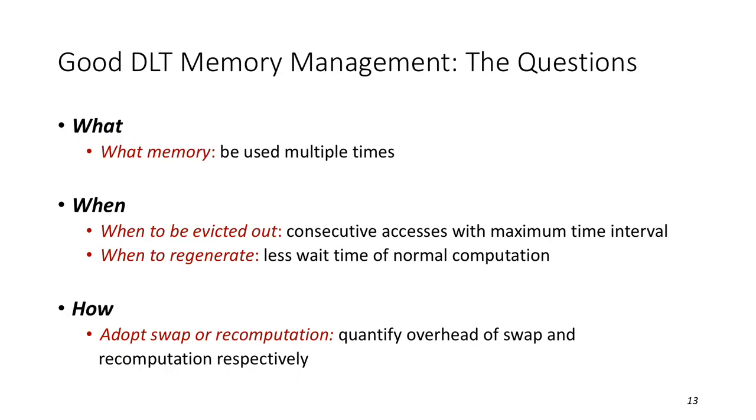Let's think about what questions we need to answer to make good memory management in deep learning training. Here, good means achieving best performance while reducing memory footprint as much as possible. First, we need to know what memory can be optimized. It's obvious that this memory needs to be used multiple times during one iteration. So we can evict it out at its one access and regenerate it at its next access. Second, we need to decide when to evict this memory out and when to regenerate. For evicting out, we can identify two consecutive accesses with the maximum time interval. For regeneration, we should reduce the waste time of normal computation. Third, we need to choose swap or recomputation for a specific memory, which requires quantifying the swap and recomputation costs.